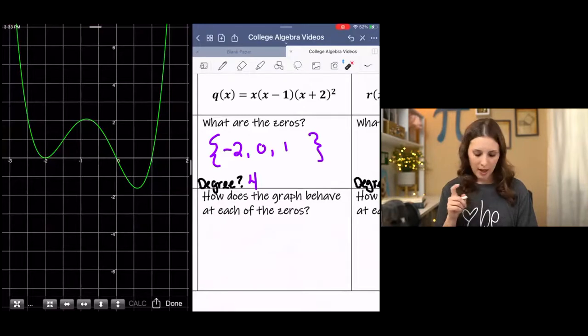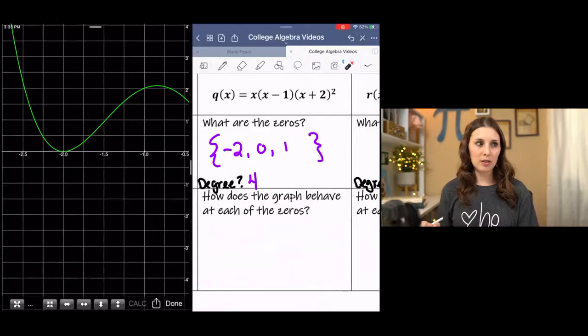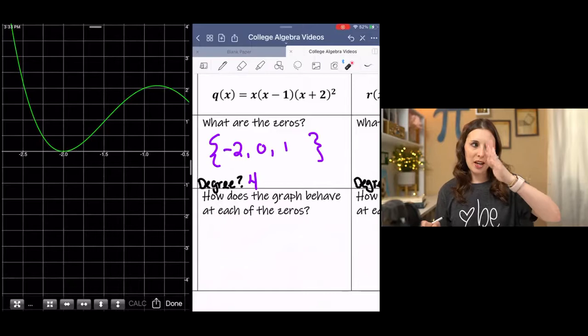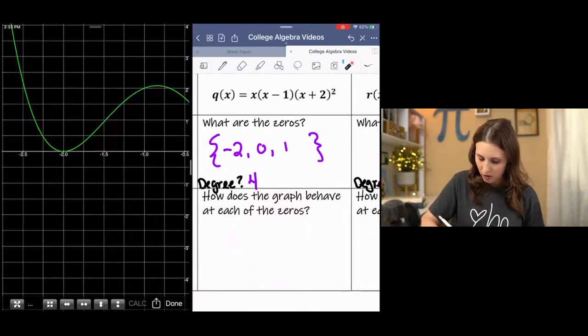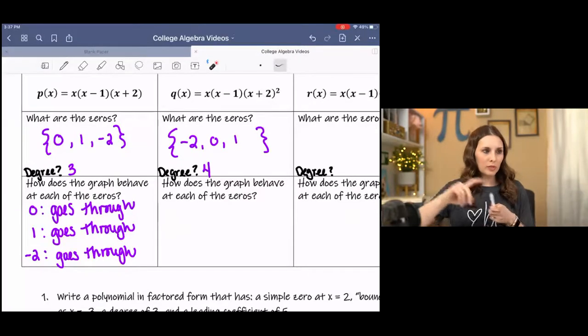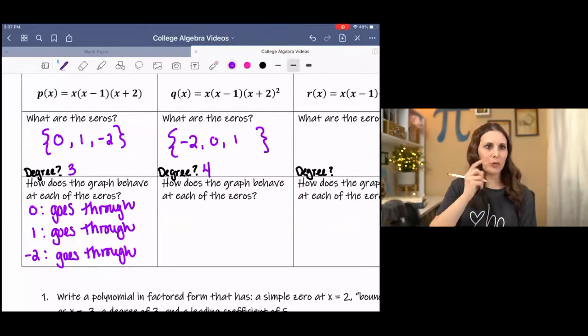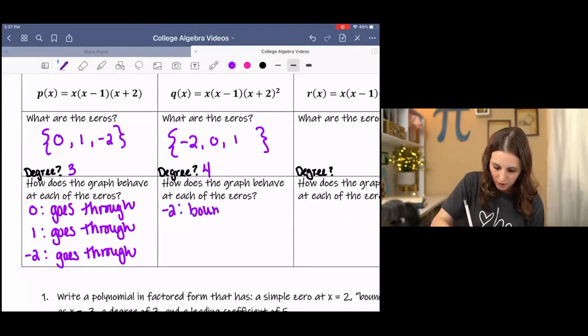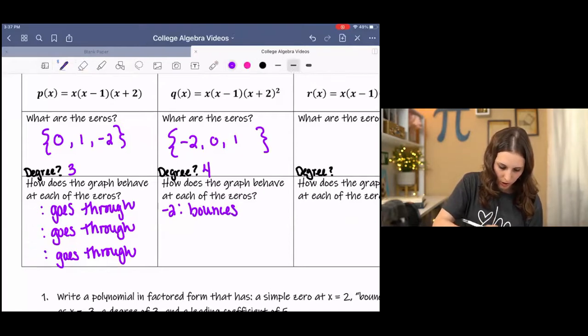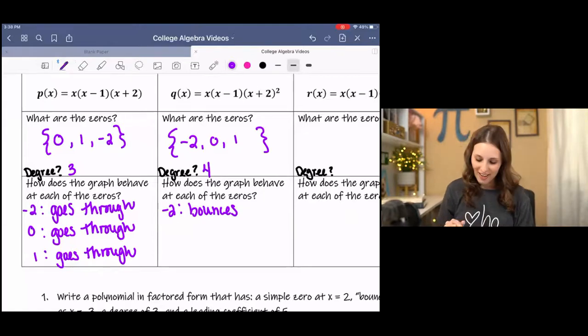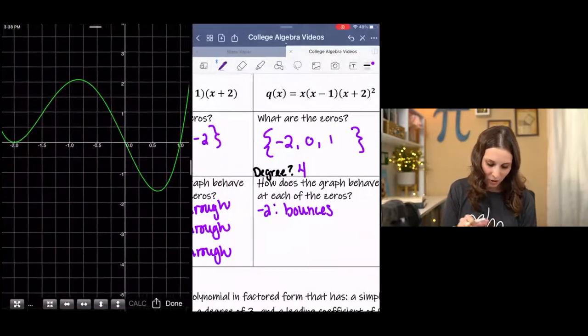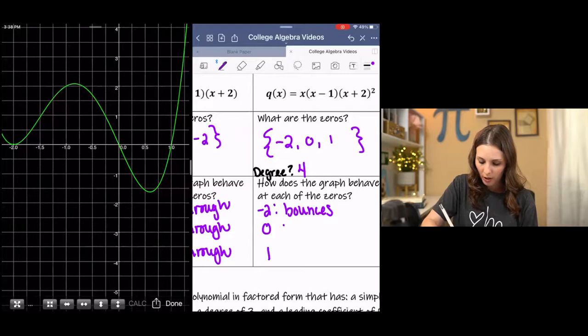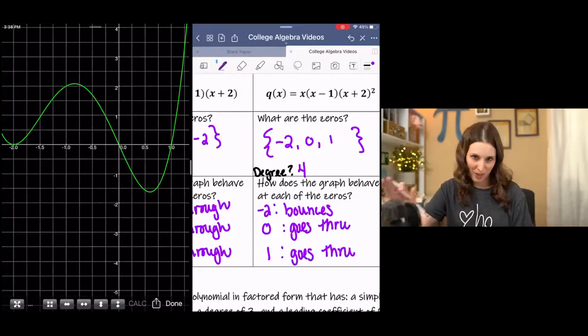Hmm. That looks a little different. At negative two, what do you notice? It no longer goes through negative two, it bounces. It kind of follows that quadratic shape, which kind of makes sense because it's to the second power. So at negative two, it bounces. That's what we'll call it. At negative two, it bounces. I'm actually going to change the order here so that we can compare it a little bit better that way. There we go. And then at zero, at zero, it goes through again. And at one, it goes through again. I'm going to abbreviate here. That is not how you spell through. That's wrong. But we're just taking notes. So I'm going to abbreviate.